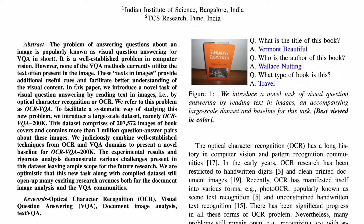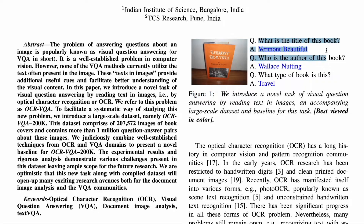As part of this paper, they introduced a novel task of visual question answering by reading text in images, based on OCR. They introduced both a novel task and pipeline, as well as a large-scale dataset of roughly 200,000 book cover images. For example, given a book cover, a question like 'What is the title of this book?' can be answered correctly — in this case, 'Very Beautiful.'